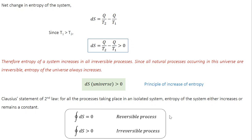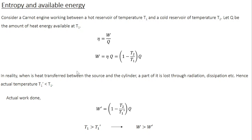The next question is: what is the connection between entropy and the energy of a system? Consider again the case of a Carnot engine working between a hot reservoir at temperature T1 and a cold reservoir at temperature T2. Let Q be the heat energy available at temperature T1. The efficiency eta equals work divided by heat absorbed, so work equals efficiency times heat energy. Substituting for efficiency, you get W = (1 minus T2 divided by T1) times Q.